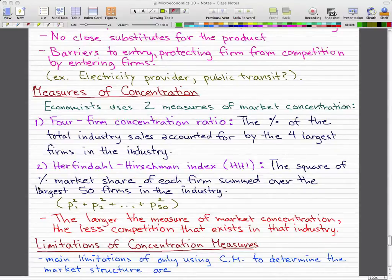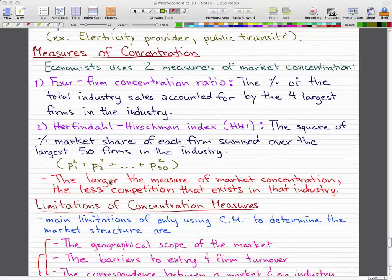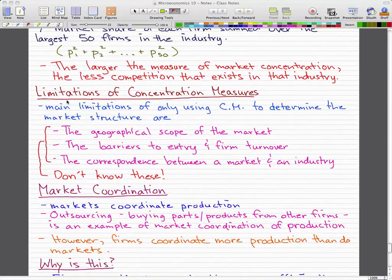And the larger the measure of market concentration, the less competition that exists in that industry. Now the limitations of the concentration measure—the main limitations of only using concentration measures to determine the market structure are the geographical scope of the market,